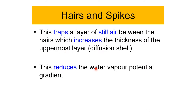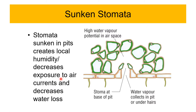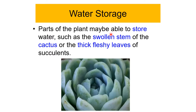For example, marram grass has sunken stomata. Parts of xerophytes may store water — like the swollen stems of cacti or the thick fleshy leaves of succulents. Looking at the photo micrograph of marram grass: the hairs trap water vapor, reducing the water potential gradient between leaf and air. The outer epidermis has small but thick-walled cells and a thick cuticle. The outer epidermis may have no stomata.